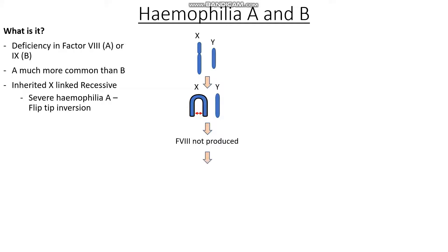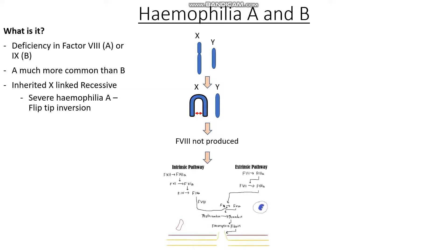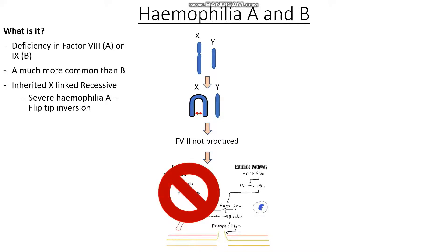So how does this affect our clotting cascade? Here you can see we have the clotting cascade, and both factor VIII and factor IX play a major role in the intrinsic pathway to help us form thrombin and fibrin. Not having enough of these essentially turns off the intrinsic pathway, or significantly reduces its effect, meaning we are simply not able to form enough fibrin and therefore cannot stabilise our platelet plug.